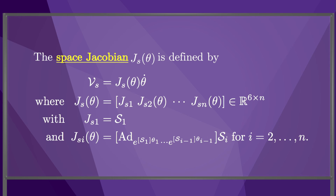Notice that no differentiation is necessary to calculate the Jacobian. Also, the space Jacobian is independent of the choice of the end-effector B-frame. In the next video, we will do a similar derivation for the body Jacobian, where the end-effector twist is expressed in the end-effector frame B.